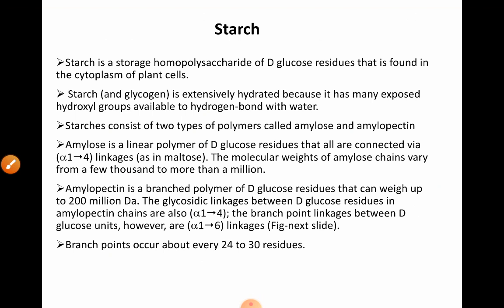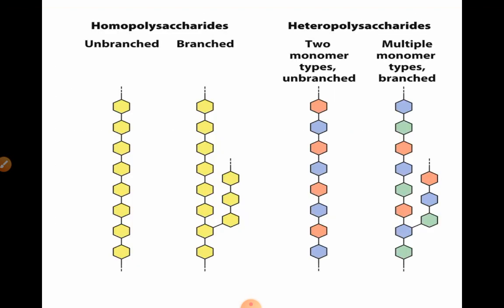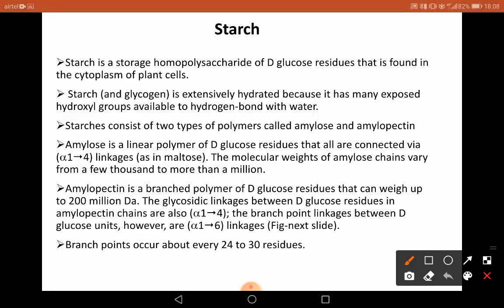Starch is a storage homopolysaccharide, which is made of repeated units of D-glucose residues. Homopolysaccharides mean the same type of monomers are present. Starch consists of two types of polymers: amylose and amylopectin. Amylose is a linear polymer of D-glucose residues that are all connected via alpha-1,4 linkages, as in maltose.